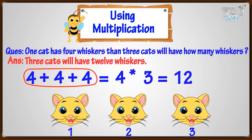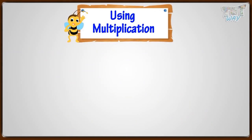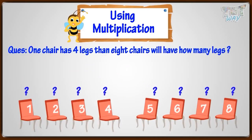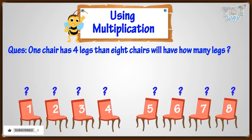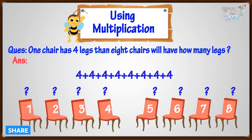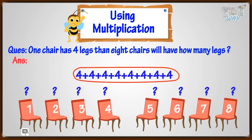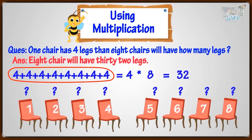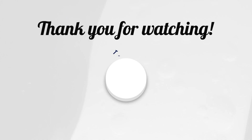Now let's make one more multiplication sentence. One chair has four legs, then eight chairs will have how many legs? Can you make the multiplication sentence for this problem? We need to add the number of legs, so it's a problem of repeated addition — adding four eight times — so we can write it as four times eight. Our multiplication sentence will be four times eight equals thirty-two, so eight chairs will have thirty-two legs.